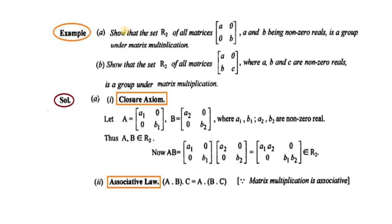Part A mein kya hai? Part A mein hamare paas set R2 hai. Aur isi R2 mein hamare paas diagonal matrices hai. And diagonal pe jo elements hai, woh non-zero hai. Isko check karna hai ke R2 under matrix multiplication ek group hai ke nai.